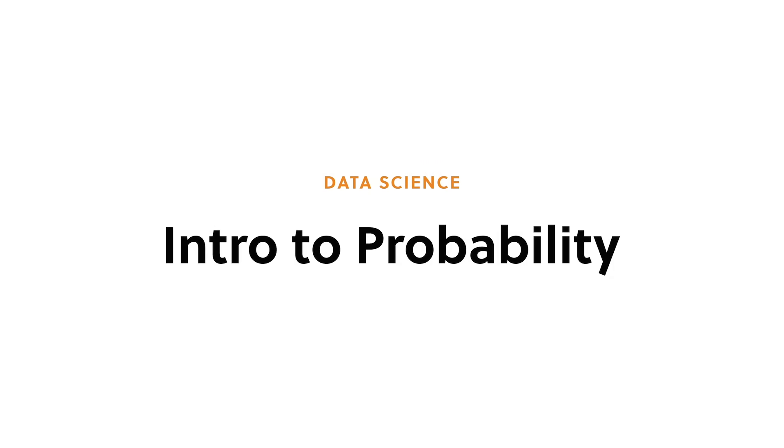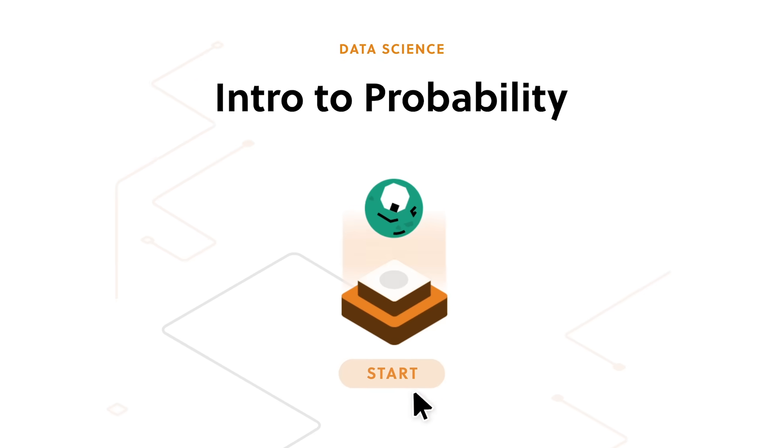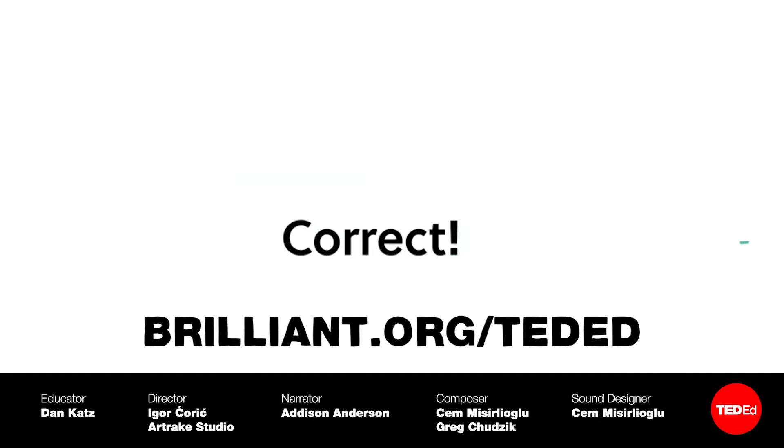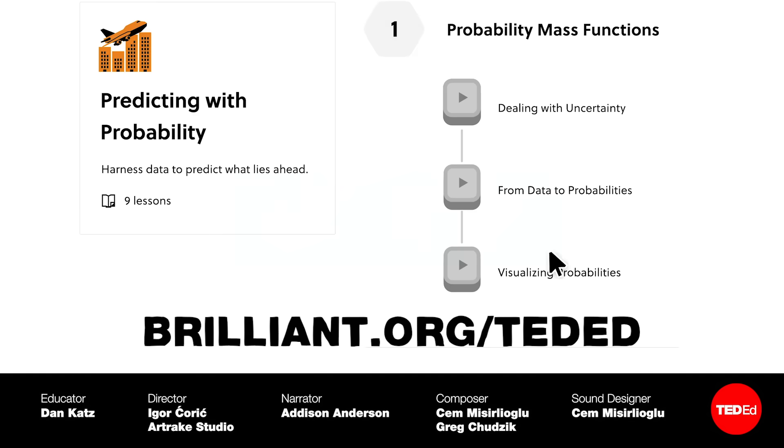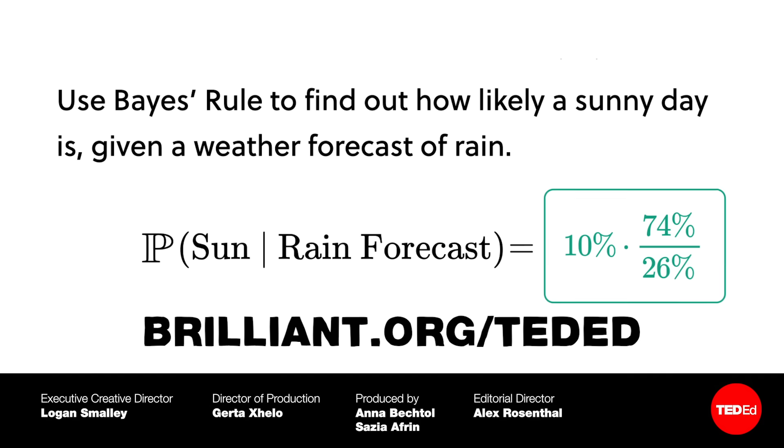A great way to wrap your mind around the notoriously tricky subject of probability is through Brilliant.org's highly interactive, intuitively-visualized courses, and that's just one among thousands of STEM lessons. Visit Brilliant.org slash TedEd for 30 days free and 20% off an annual subscription.